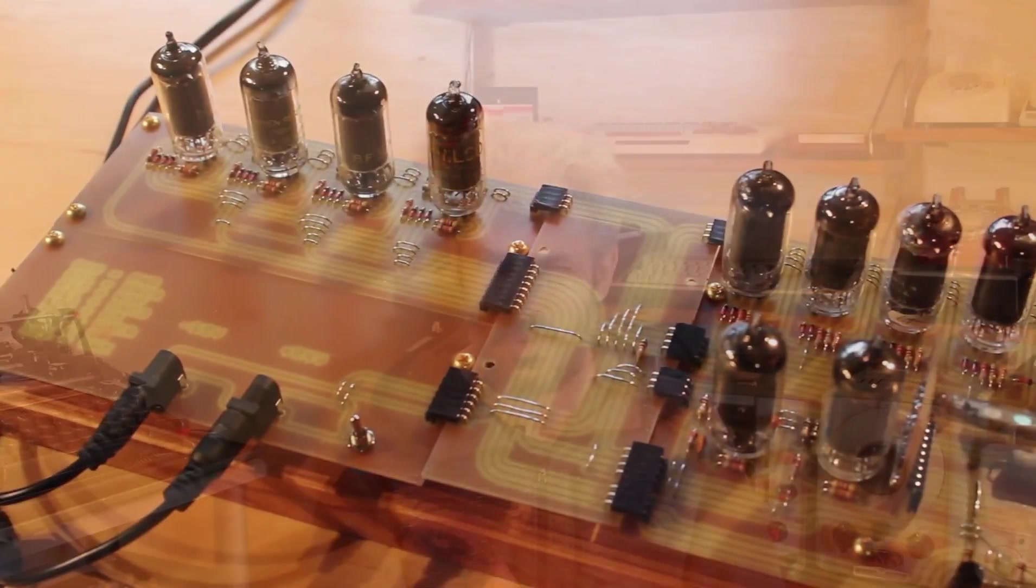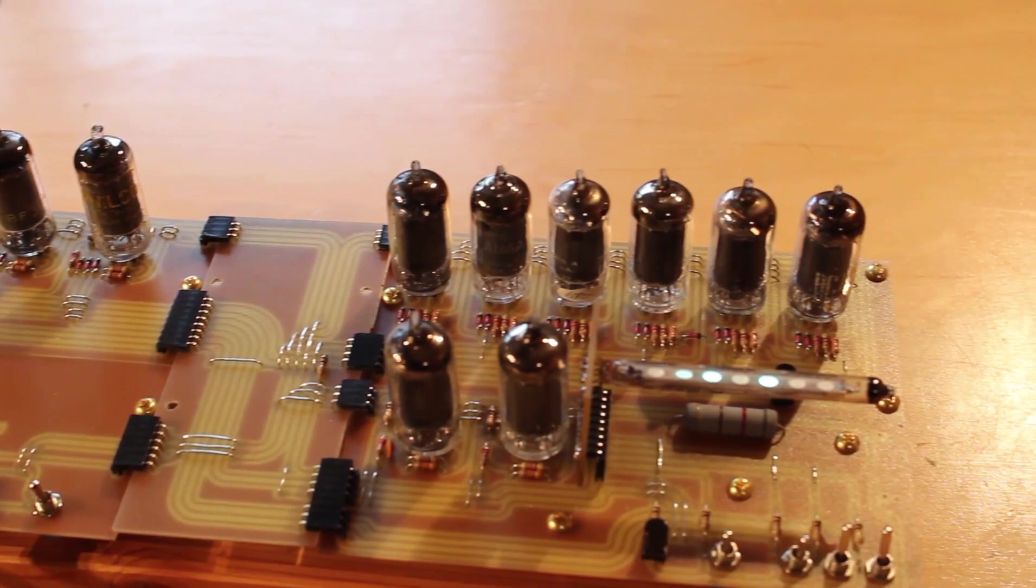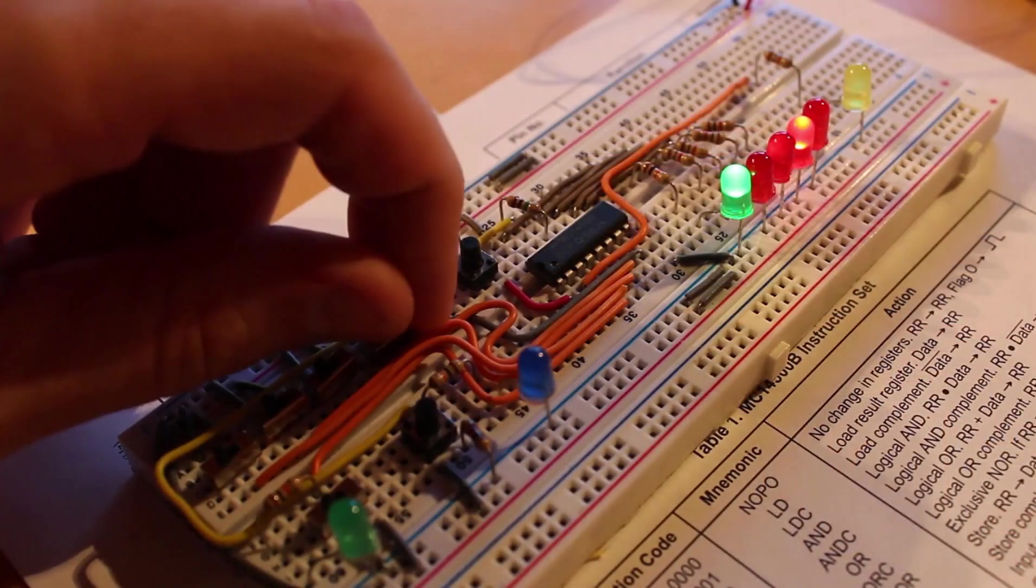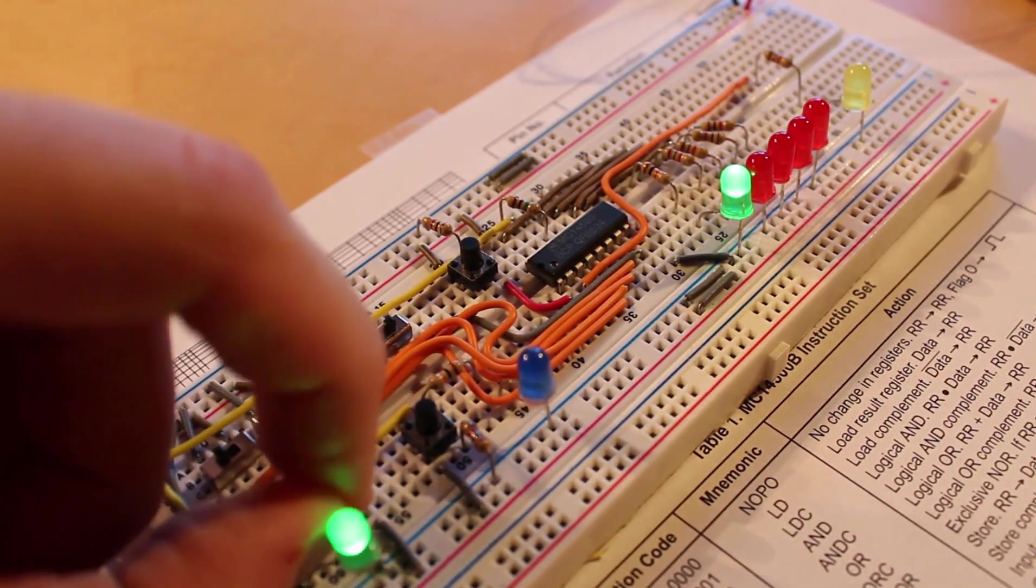During the Hack Chat, there was a little bit of a lull near the end. And I took that opportunity to ask a question to Curious Mark. It's no secret that we've been doing a ton of work based around the Motorola MC14500 chip. It's a little one bit microprocessor. And I'm trying to recreate it with vacuum tubes. And I'm also building up a small version of it on a breadboard. And so I'm really enamored with this chip.